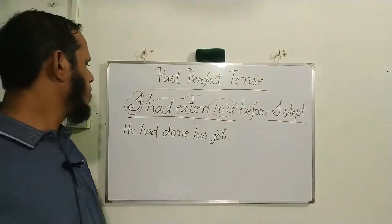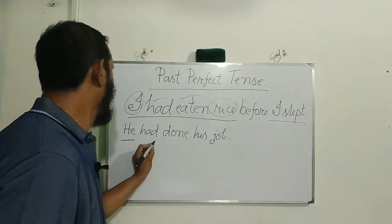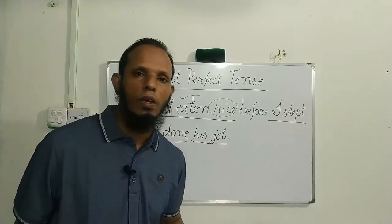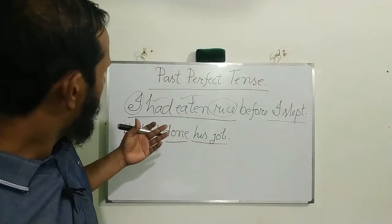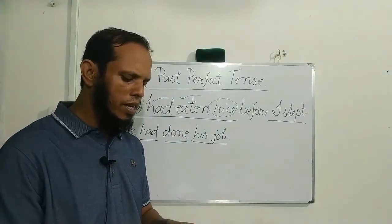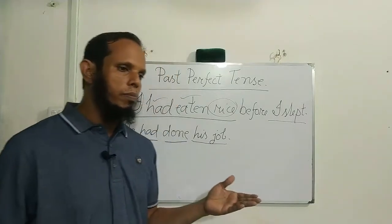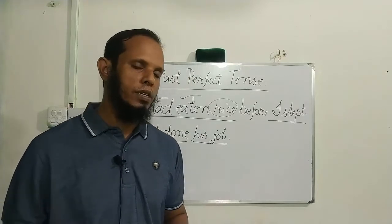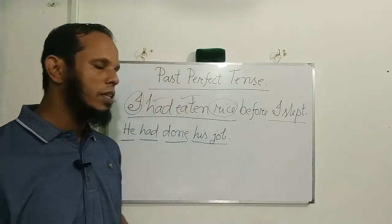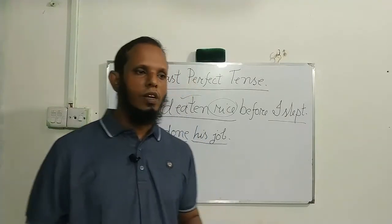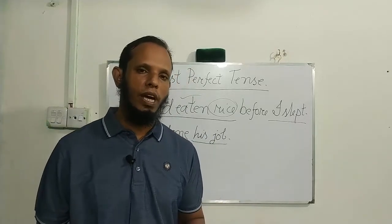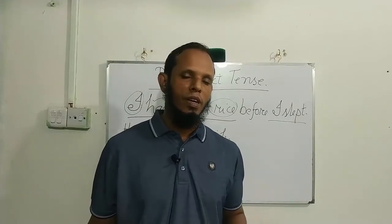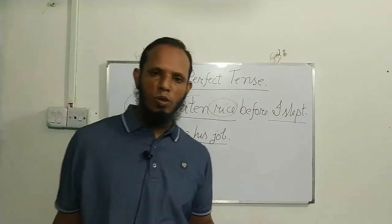So the structure matches our example. Here we have the subject, 'had', the past participle form of the verb, plus object or extension. Some students get confused with 'had', but please don't get confused.